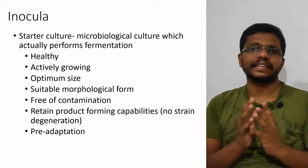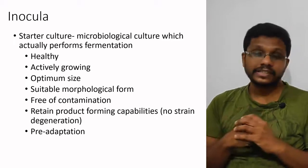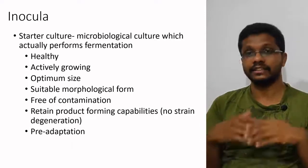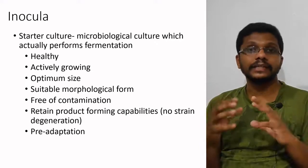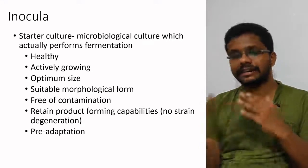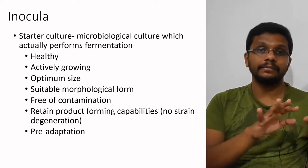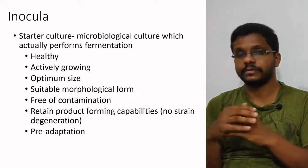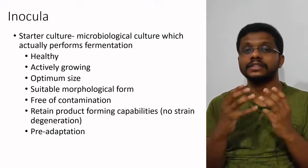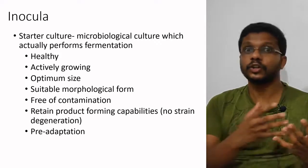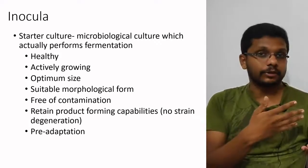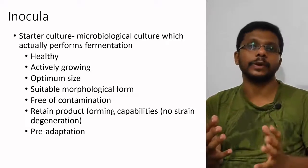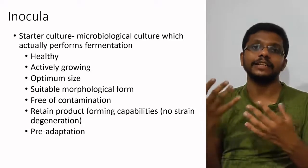What are the ideal characters of an industrial inoculum? First, it should be healthy and have the capability to form products with high efficiency and high productivity. Second, it should be actively growing — meaning it should be in the early log phase. In industry we count time as money, so if the microorganism takes more time for growth it becomes more expensive and the running cost goes high. To get an actively growing microorganism, we pre-culture it in another medium to make it active, so that at the time of inoculation it will be in the exponential phase of growth with no delay.